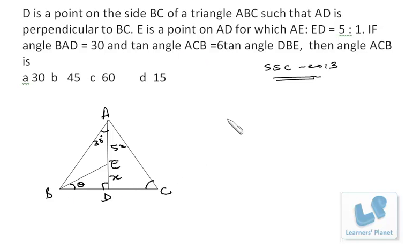Now tan angle ACB, here I take ACB as C, so tan C is equal to 6 tan theta. That is given. DBE that is tan theta, so that's given. Now the problem becomes very simple.